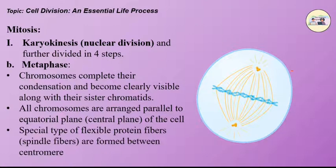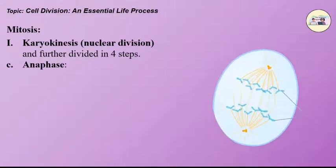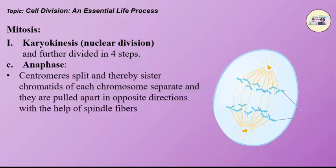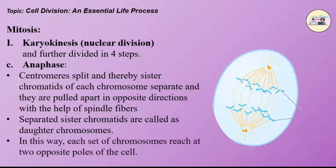The third step is anaphase. Centrums split and thereby sister chromatids of each chromosome separate and they are pulled apart in the opposite direction with the help of the spindle fibers. Separated sister chromatids are called daughter chromosomes. In this way, each set of chromosomes reaches the two opposite poles of the cell.